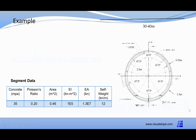The TBM tunnel lining consists of 6 segments. The key segment is 25.5 degrees and other segments are 67.5 degrees. The thickness of the segment is 35 centimeters and the length in the longitudinal direction is 1.3 meters. The table shows design data for the segment including concrete strength, Poisson's ratio, area, EI, EA, and self-weight.